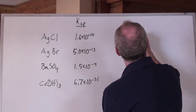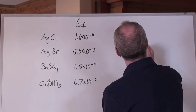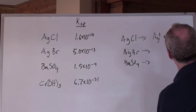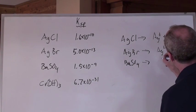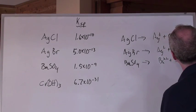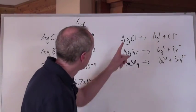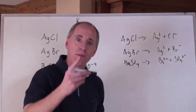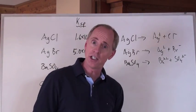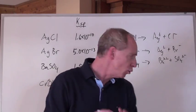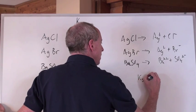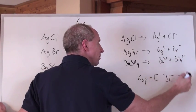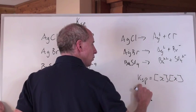Whether you're doing AgCl, AgBr, or BaSO₄, when they dissociate into their ions you get Ag⁺ and Cl⁻, Ag⁺ and Br⁻, and Ba²⁺ and SO₄²⁻. When each of these chemicals dissociates, it makes X of this and X of this — a one-to-one ratio. They all do this.